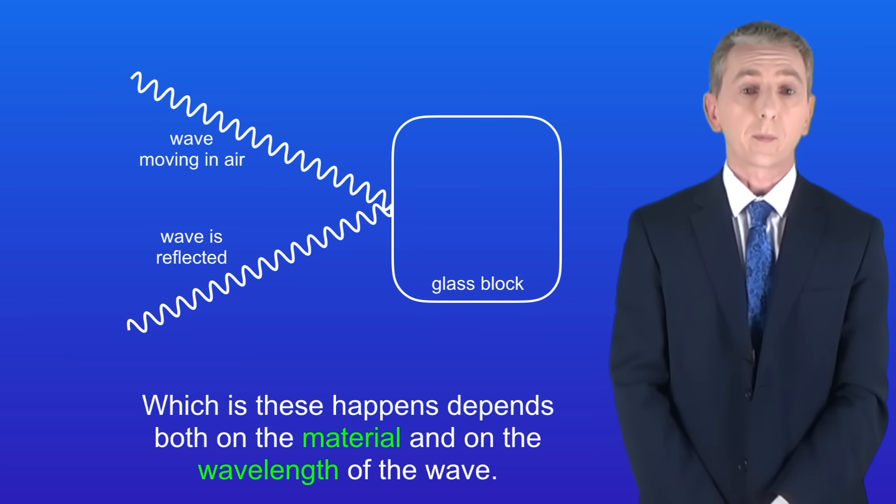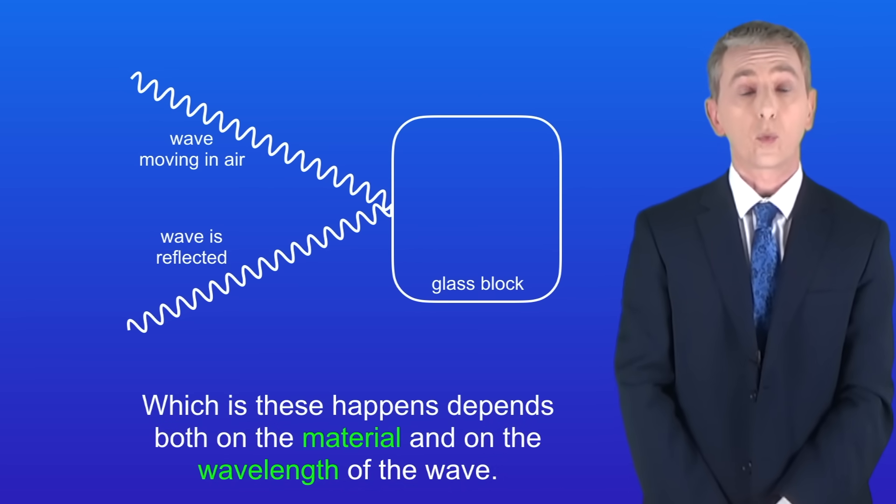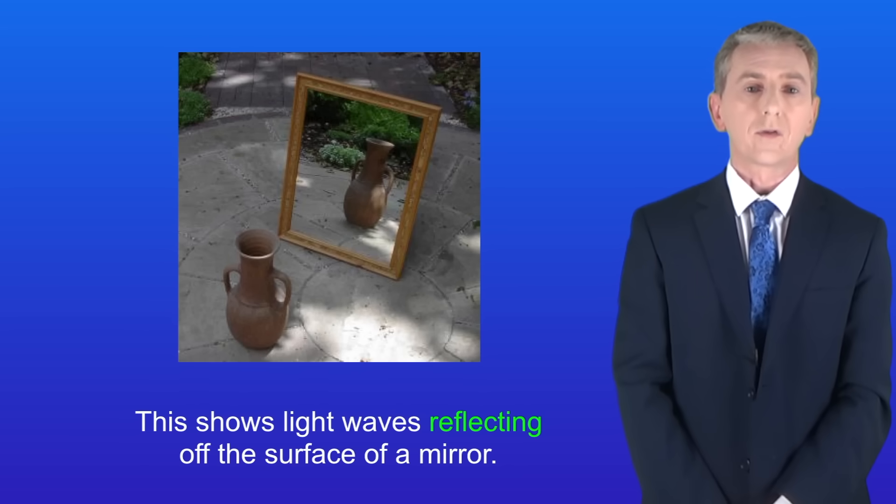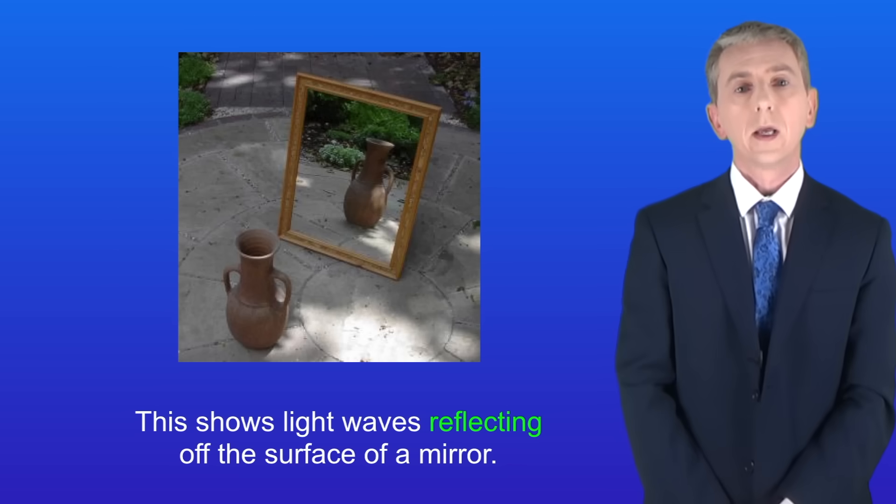Which of these happens depends both on the material and on the wavelength of the wave. Now in this video we're looking at reflection of waves, for example light waves reflecting off the surface of a mirror. You need to be able to draw a ray diagram to show how this works. So we're going to look at that now.